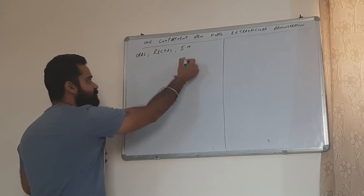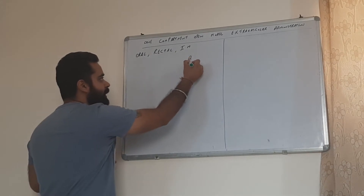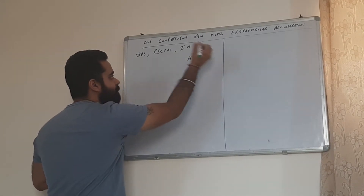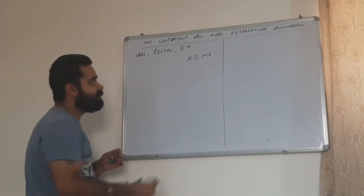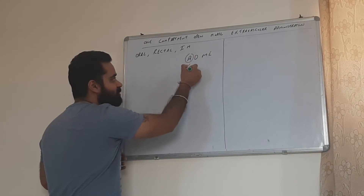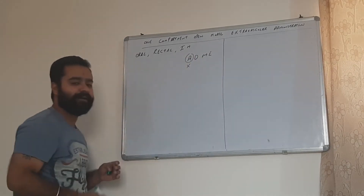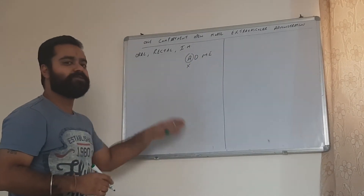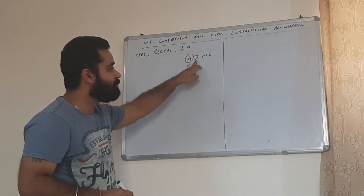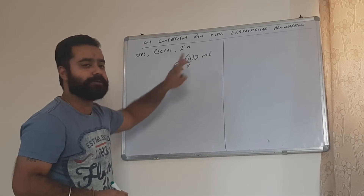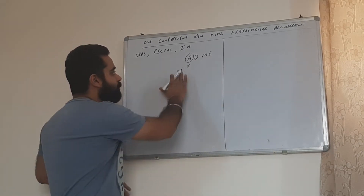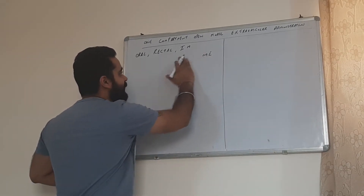Out of the four steps — A, B, M, and E — in the intravenous route, absorption was not required as the drug was directly entering into the bloodstream, into distribution. But over here, absorption will happen.